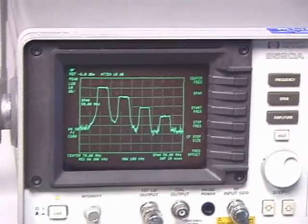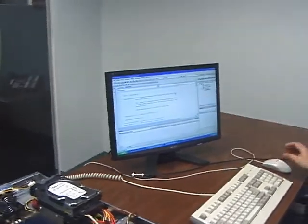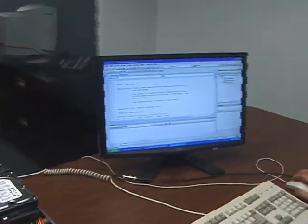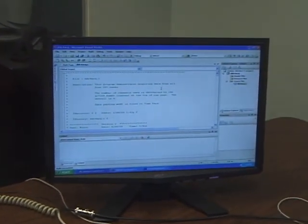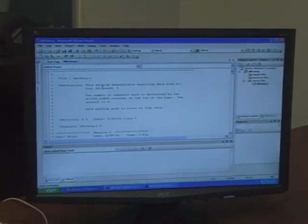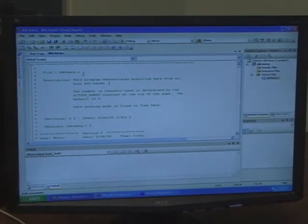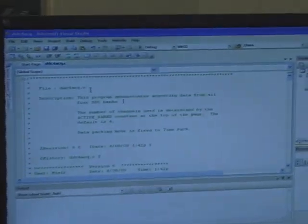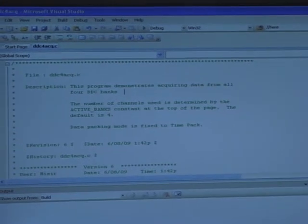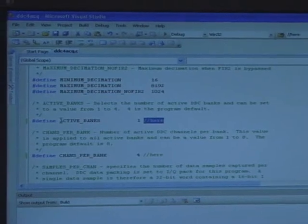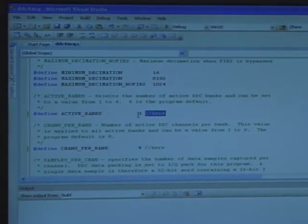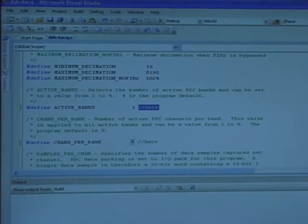Now I'm going to go and show you the software. ReadyFlow software comes with several examples. The example that I chose is DDC4ACQ, and this allows you to program multiple channels per bank and multiple banks. I've set this up so that we have, at least for this demonstration, one active bank and four channels per bank.